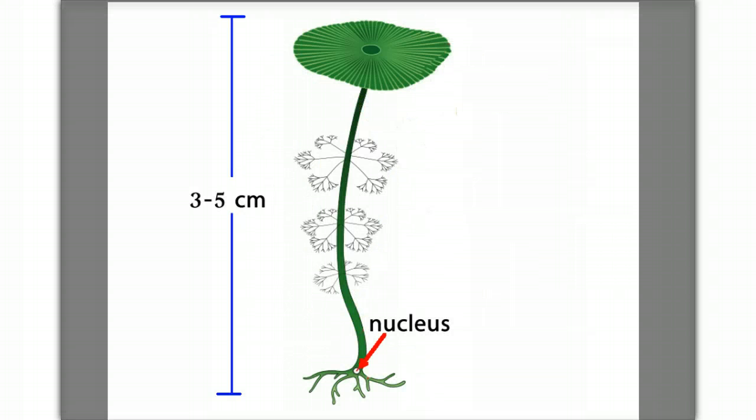In the 1930s, Joaquin Hammerling was studying acetabularia, also known as the mermaid's wine glass, in part because of its large size, 3 to 5 centimeters in length, and the fact that it consists of a single cell with a single nucleus.